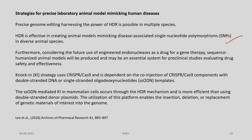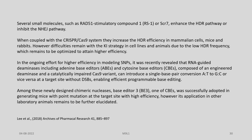Single-stranded oligonucleotide-mediated knock-in in mammalian cells occurs through the homology-directed repair mechanism and has been found to be more efficient than using double-stranded donor plasmids. This enables the insertion, deletion or replacement of genetic material of interest into the genome. There are small molecules such as RAD51 stimulatory compound 1 (RS1 or SCR1) which enhance the HDR pathway or inhibit the non-homologous end joining pathway. When coupled with the CRISPR-Cas9 system, these compounds increase HDR efficiency in mammalian cells, mice and rabbits. However, difficulties remain with the knock-in strategy due to low HDR frequency, which remains to be optimized for higher efficiency.